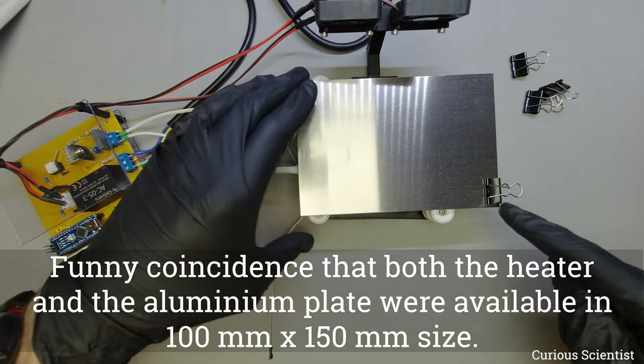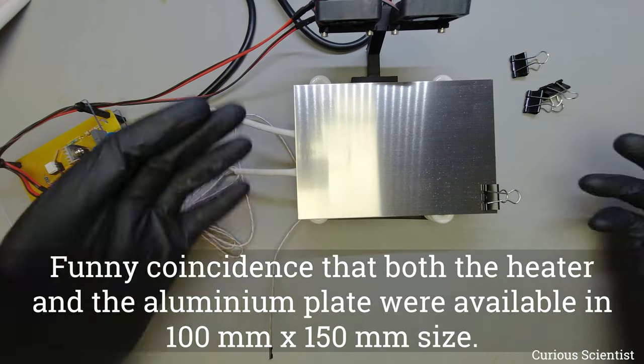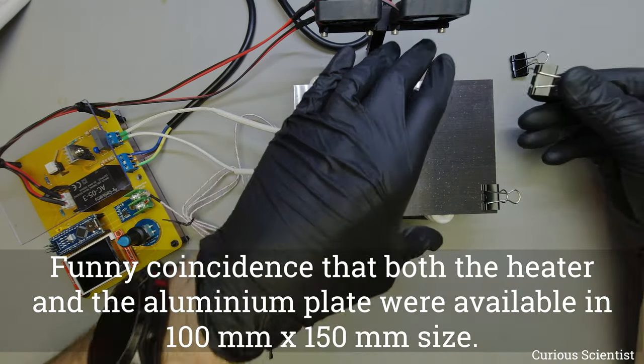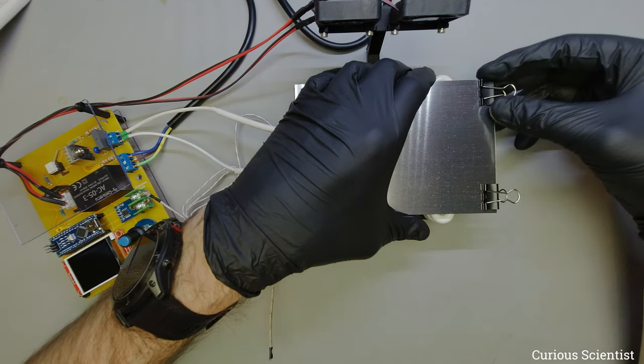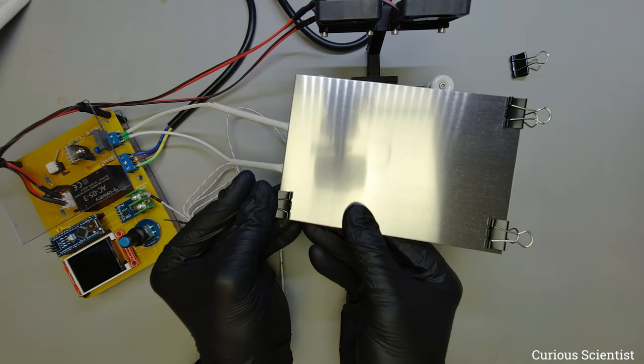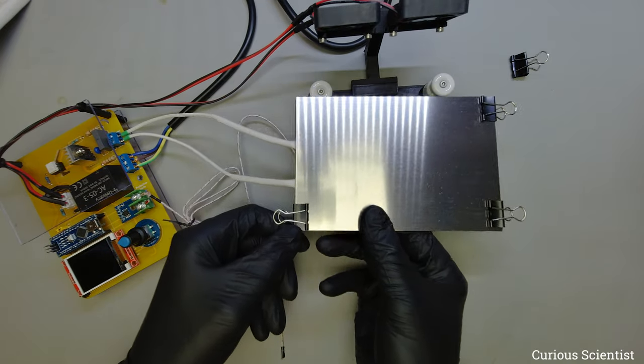I have no idea if this is some kind of standardized size or something like that, it's 10 by 15 centimeters, but the mica sheet and this aluminum sheet were in the same size. It's a bit surprising that I could get both of them in the same size.